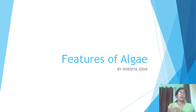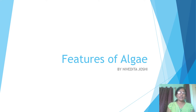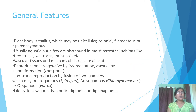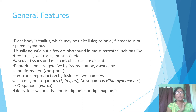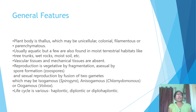This video begins with algae — a classification video was already covered previously. This video majorly consists of general features of algae. When we say algae, the body cannot be differentiated into root, shoot, and leaves like plants. This type of body is called thallus, so the plant body is thaloid. It may be unicellular, colonial, filamentous, or parenchymatous.